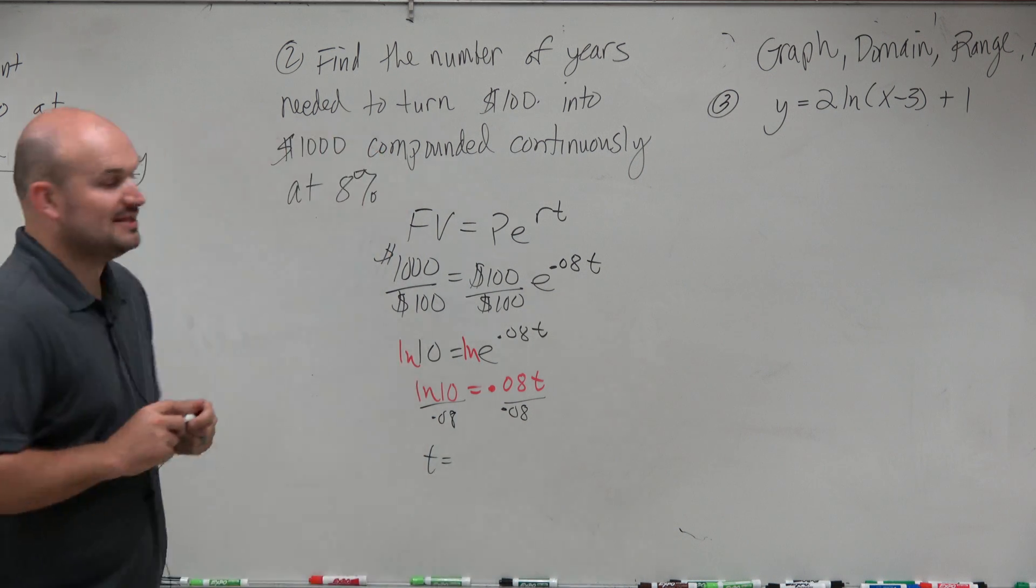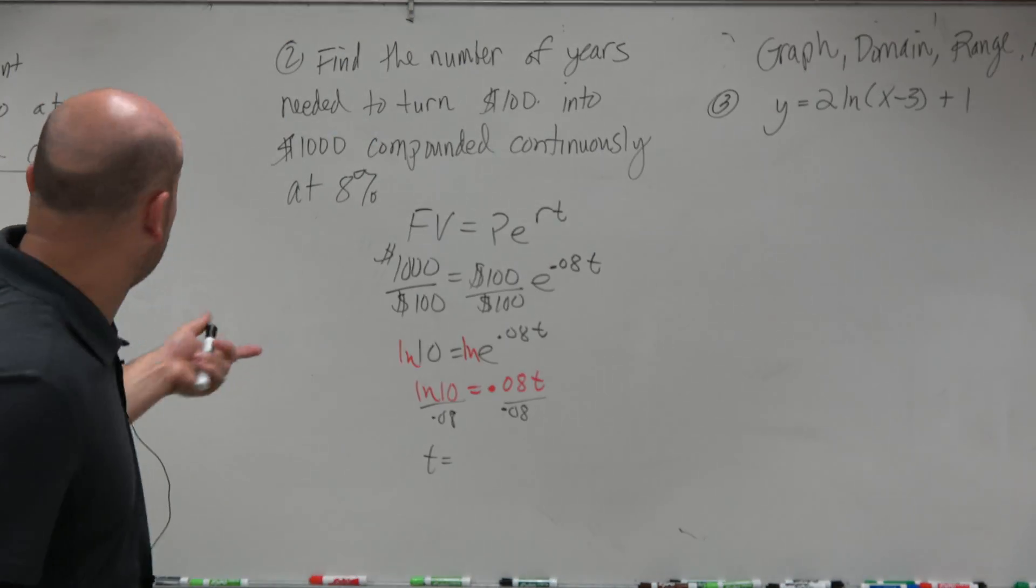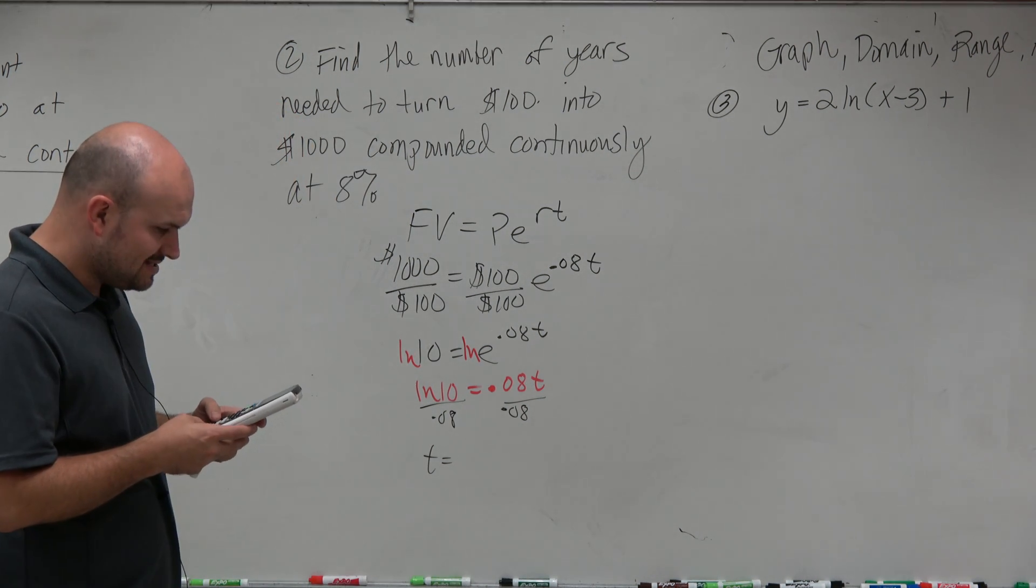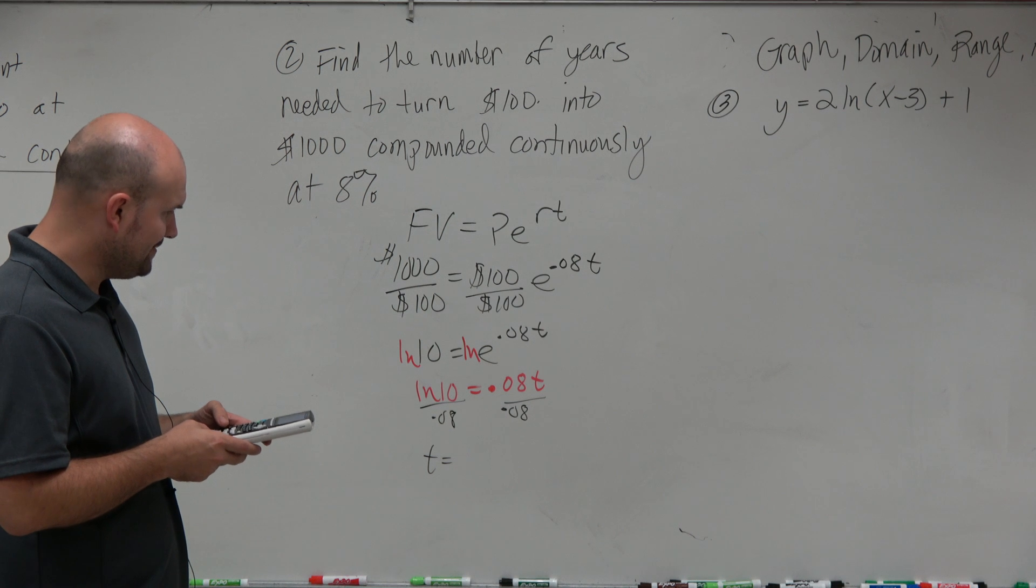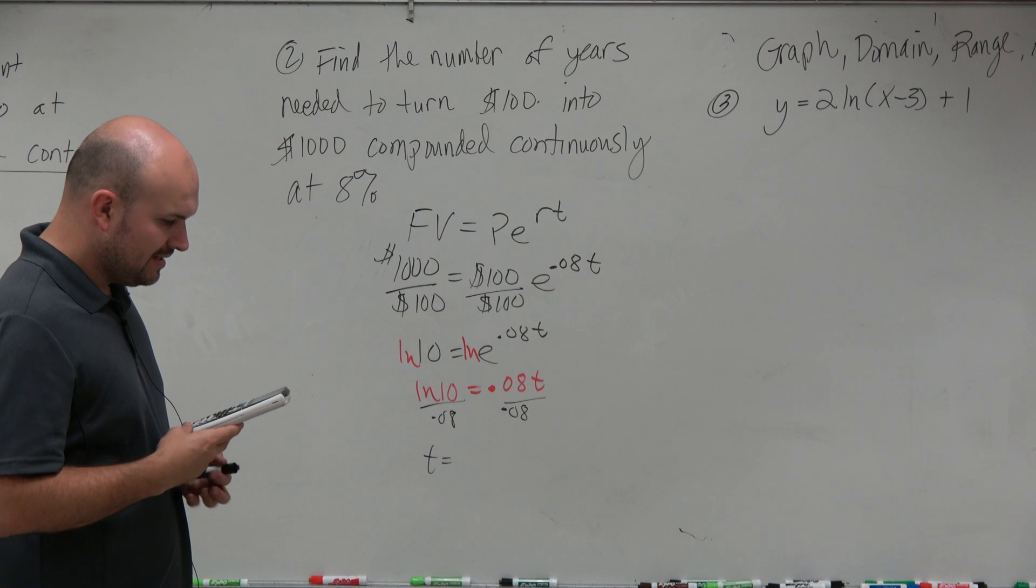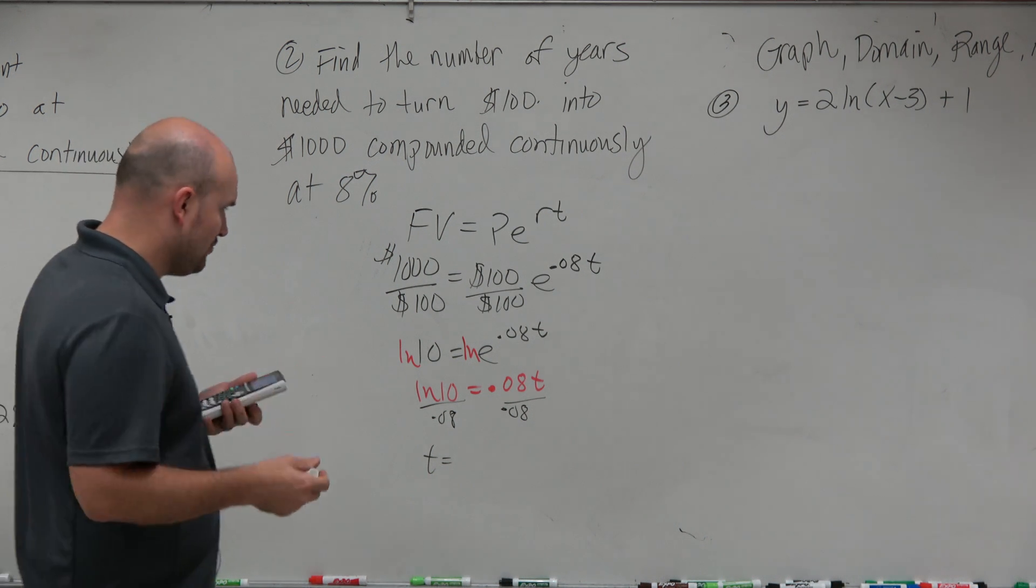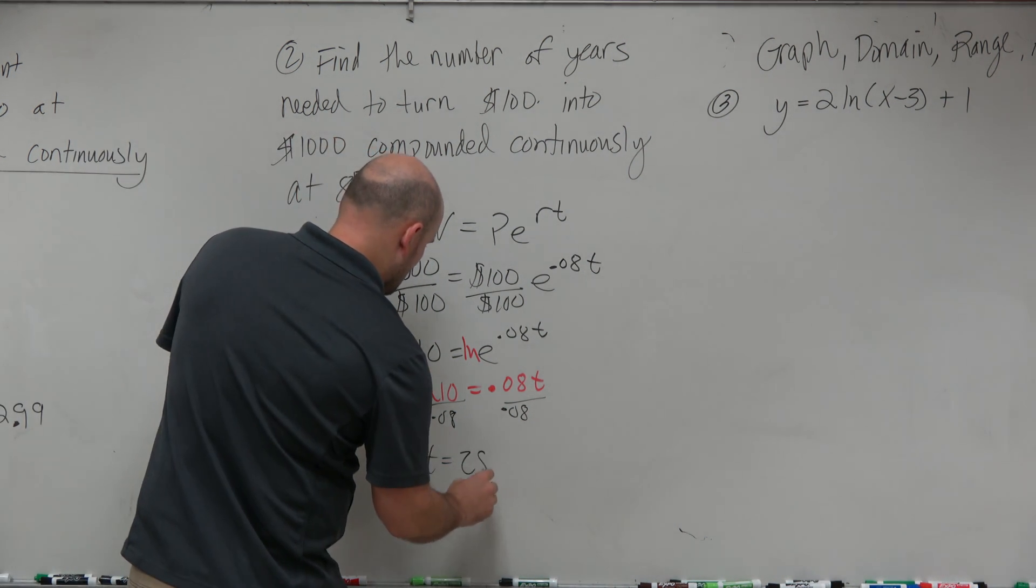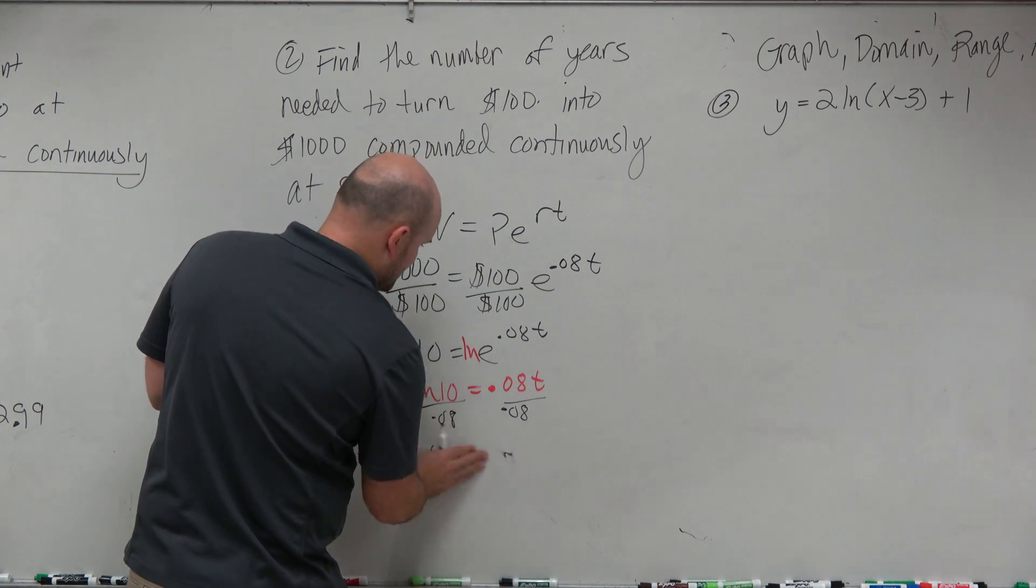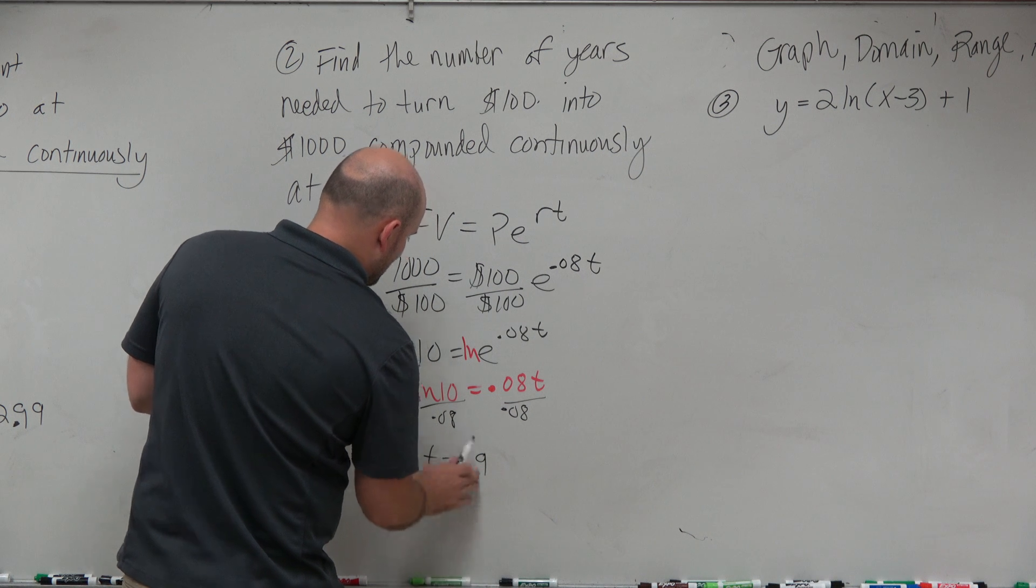And T, which is going to represent the number of years it's going to take at earning 8% for you to go from $100 to $1,000 is, see here. So we do ln of 10 divided by 0.08. And that is going to be 28.7, or let's just round it up to 29 years. 29 years.